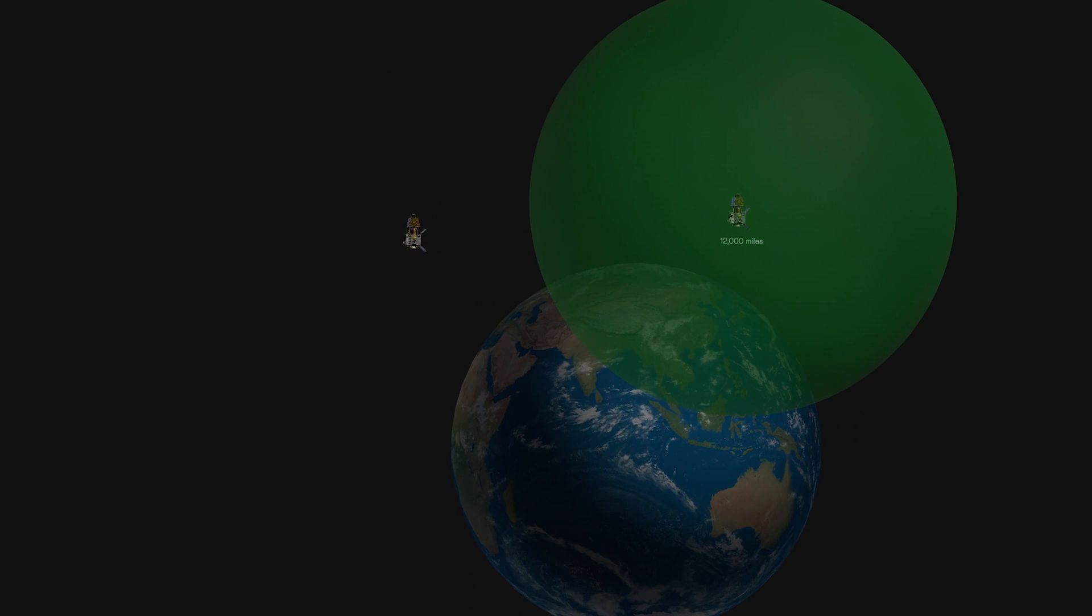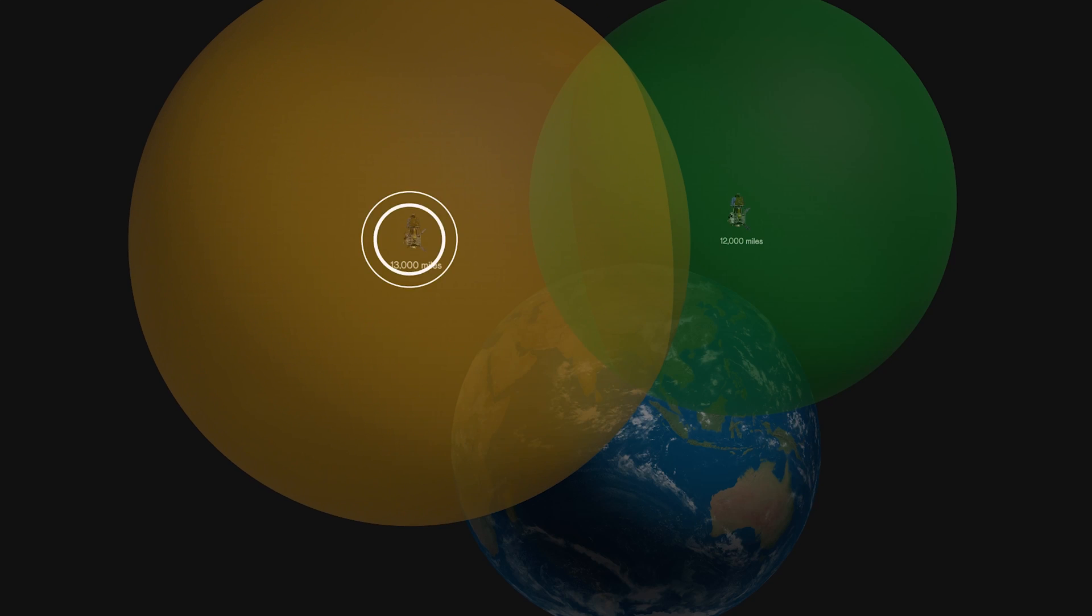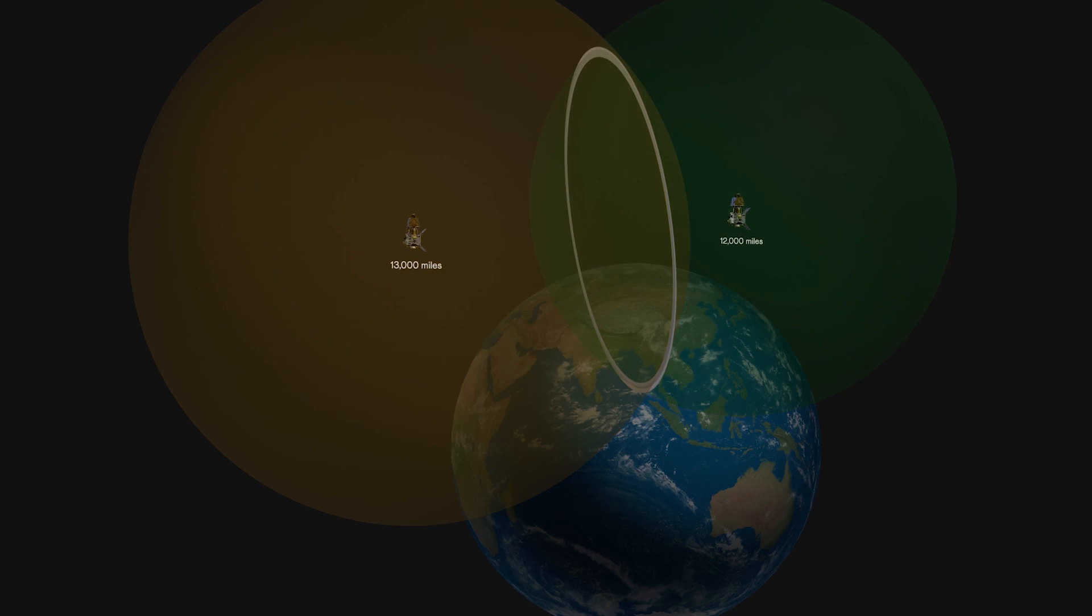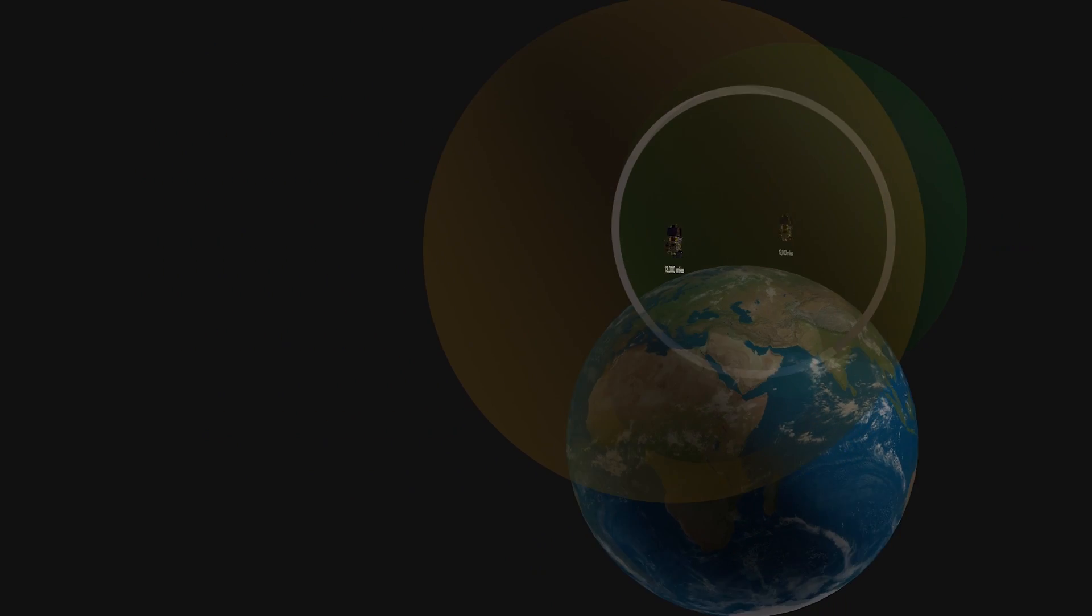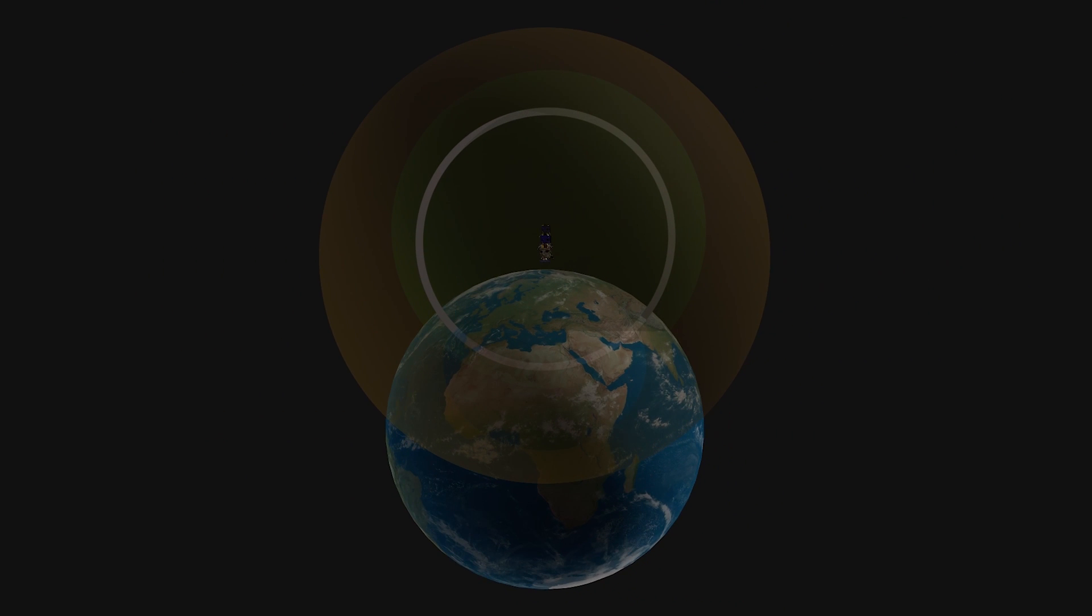Suppose we add another satellite, and your phone detects that it is 13,000 miles away. Now you could be anywhere on the surface of this sphere. Considering both distances, you can be anywhere on this circle, formed by the intersection of these two spheres. We are down from a sphere of possibilities to a circle, but still not enough.